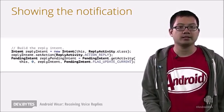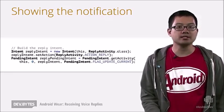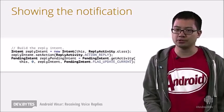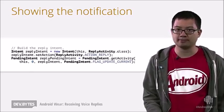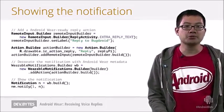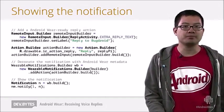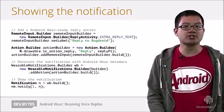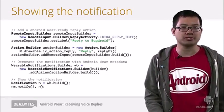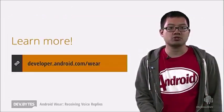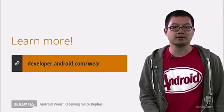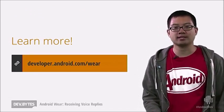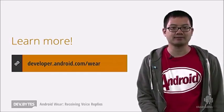Note that the intent should be for an activity, because otherwise pressing the action won't close the notification shade. Finally, we'll use the RemoteInput.Builder and Action.Builder classes to construct an action that'll be capable of receiving voice input. Be sure to check out the documentation and sample code in the developer preview on developer.android.com. Thanks and happy coding!